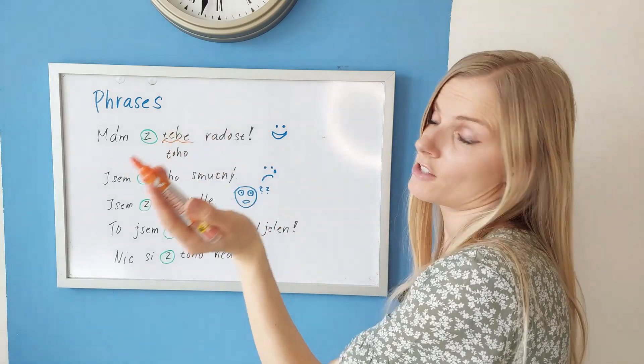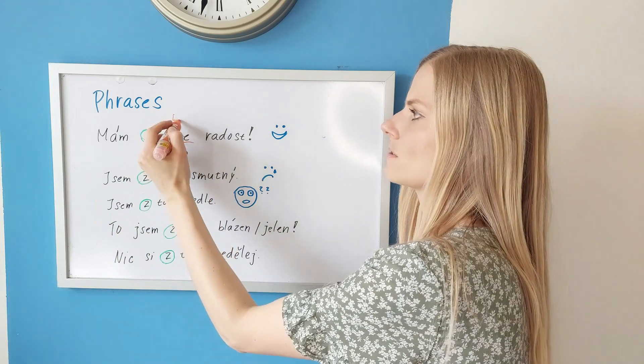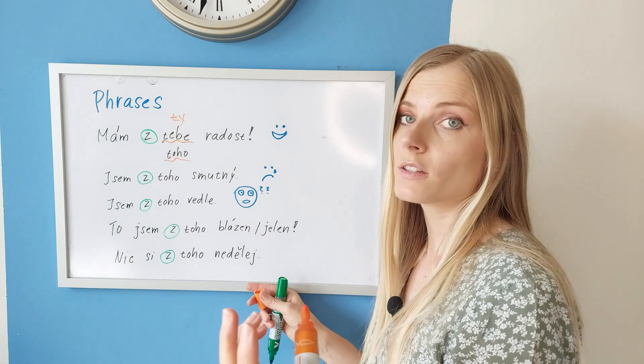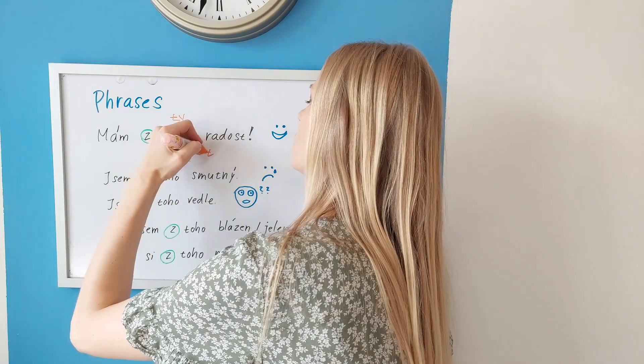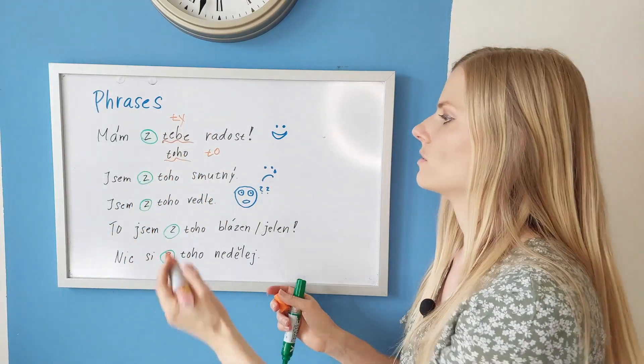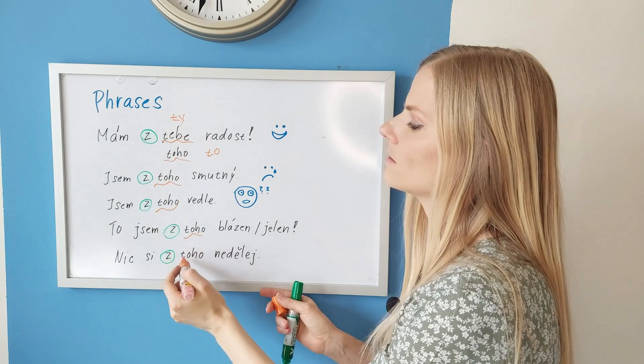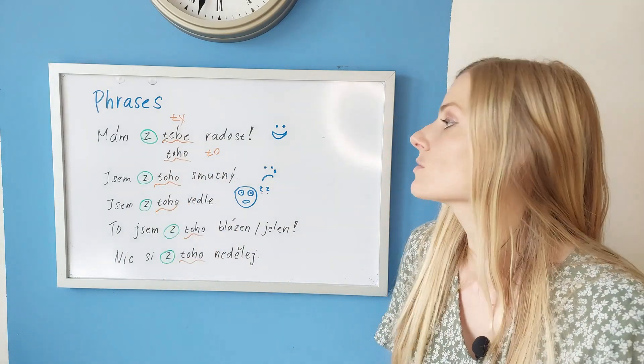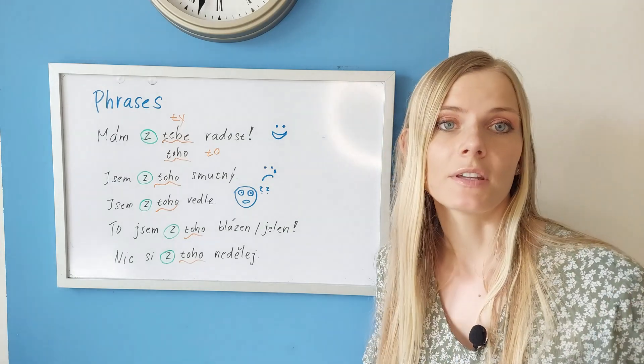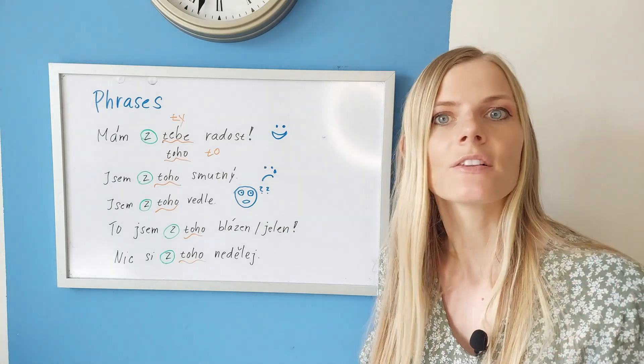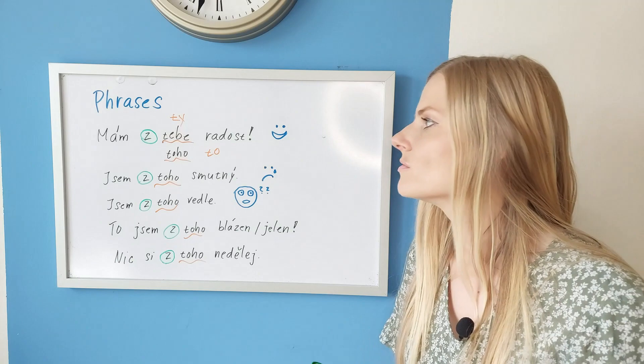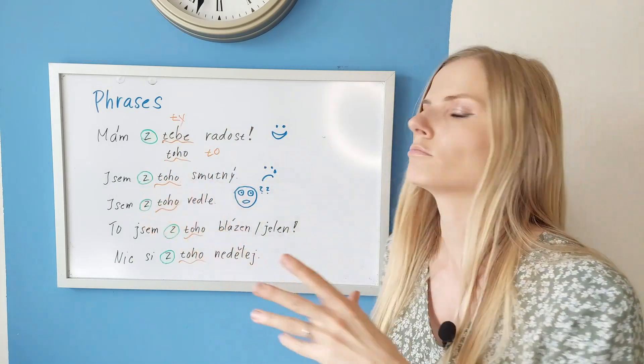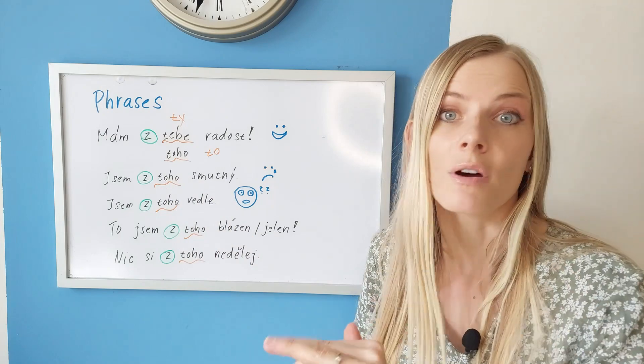And again let's look at the forms following the preposition. Z tebe - from you. Again this is genitive. Ty was the original word. Toho - the nominative form was to, and toho is the genitive form. So remember when we speak about an emotion, something makes us feel a certain way, we very often use z and then the pronoun z toho. So I'm feeling a certain way from it.